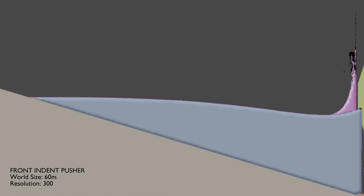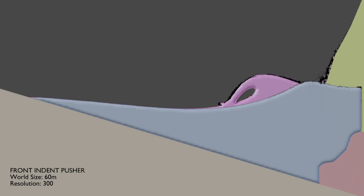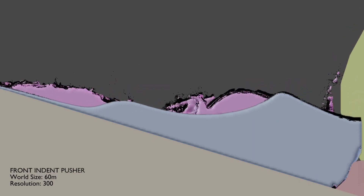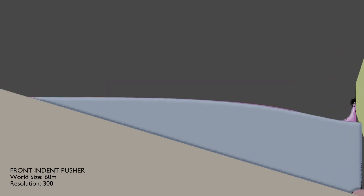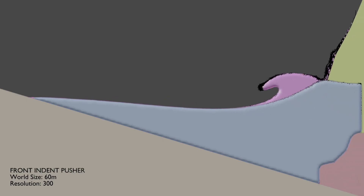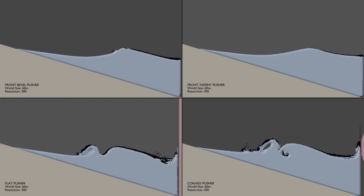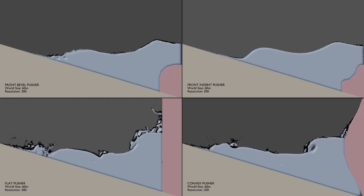So what have we learned from this testing? For one, we now know the difference in the waves made by the horizontal and vertical pushers. The vertical pusher tends to create slow rolling waves which develop as they approach the shore. On the other hand, the horizontal pusher generates immediately curling waves right at the source. We'll be able to utilize these different types of pushers to make different waves later on. The best vertical pushers were the front bevel and front indent pushers. From the horizontal pusher category, I selected the flat pusher and the convex pusher.